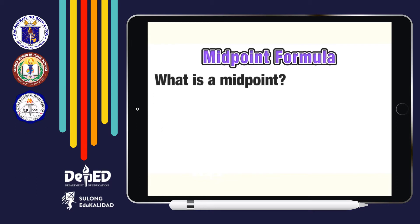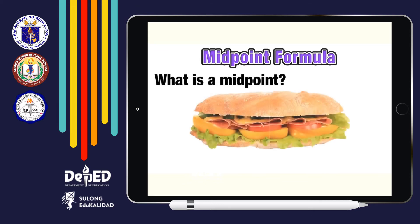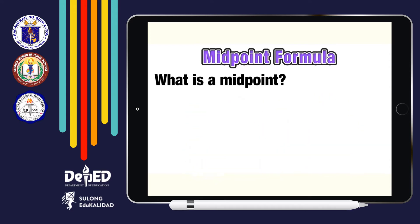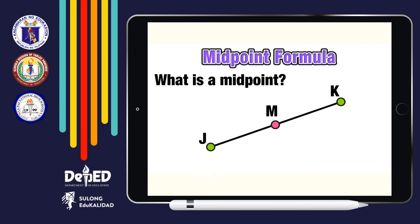Let's refresh our idea on the midpoint formula by asking ourselves: what is a midpoint? If you had an 8-inch burger, the midpoint would be the location where you would cut it in half to make two smaller 4-inch burgers. We can extend this thinking to finding the midpoint of a line segment that connects two points — by finding the point that is directly in the middle of the line segment such that it cuts it into two congruent halves.